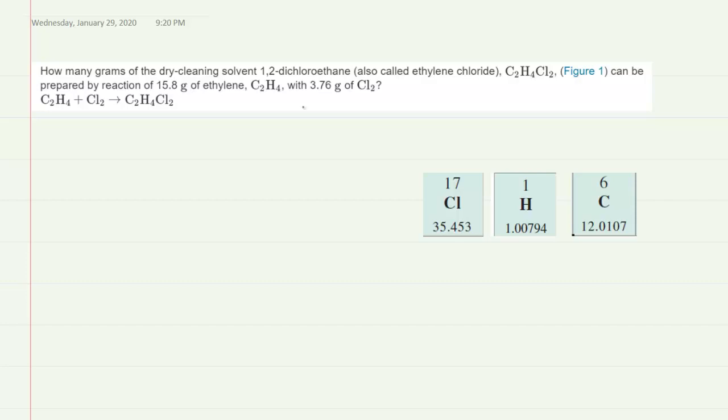In order to determine the number of grams of 1,2-dichloroethane based on the given quantity of the reactants, what we first would want to do is determine the molar mass. So we can start with the molar mass of C2H4.